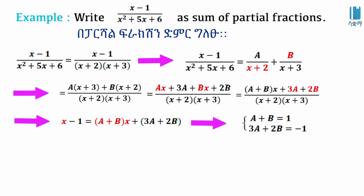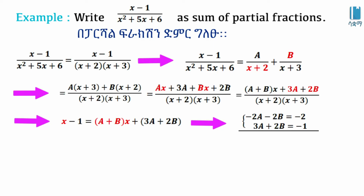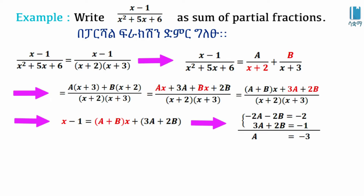So the system is: A + B = 1 and 3A + 2B = -1. Subtracting gives -2A + 3A = -2, so A = -3. Wait, working through: -2A - B = -2 and combining terms gives the result A = -3.